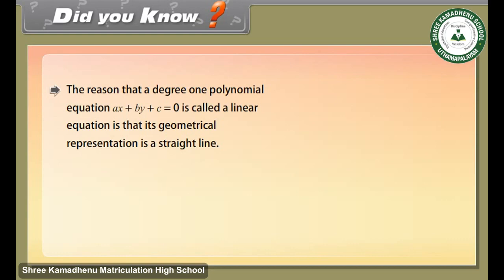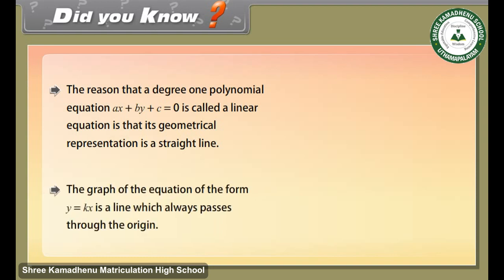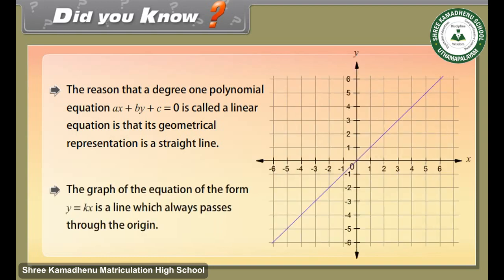The reason that a degree 1 polynomial equation AX plus BY plus C equals zero is called a linear equation is that its geometrical representation is a straight line. The graph of an equation of the form Y equals kX is a line which always passes through the origin.